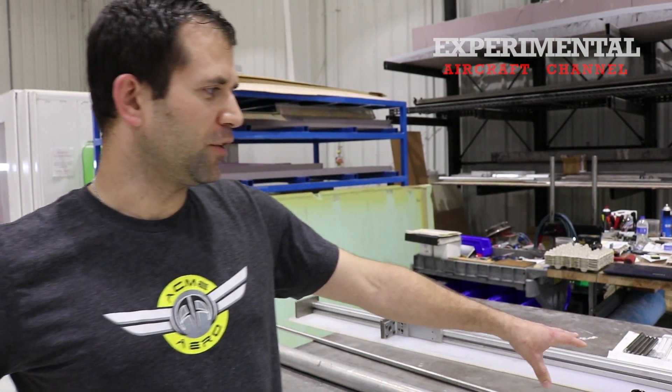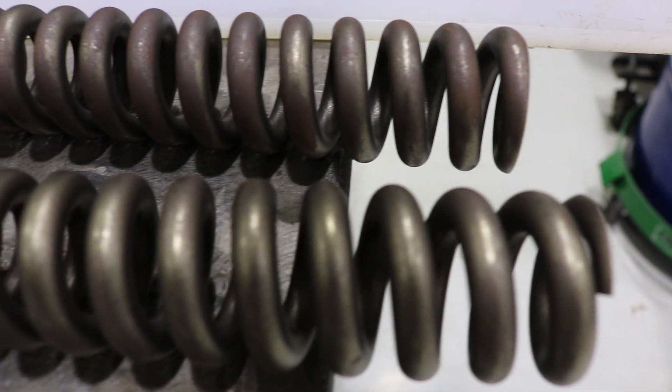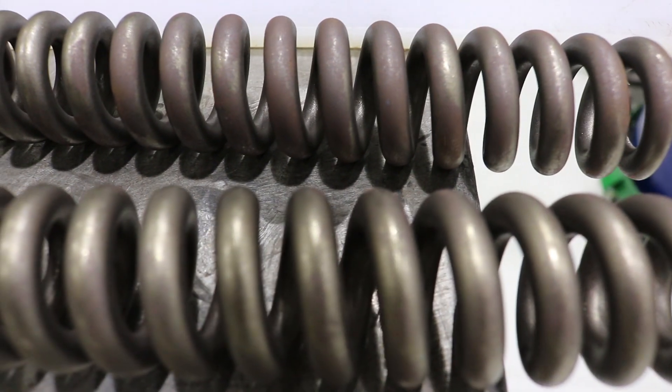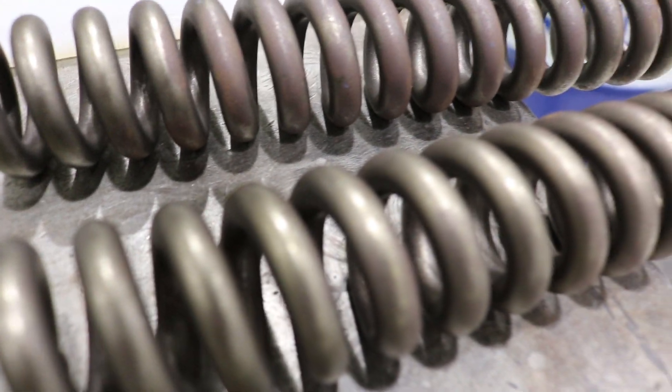The springs here—you'll see a couple different springs. Two of these are the taller ones that go in the Cub shocks. They're different rates, although they look very similar, and they're designed to handle different loads of aircraft depending on which type of aircraft it goes on.